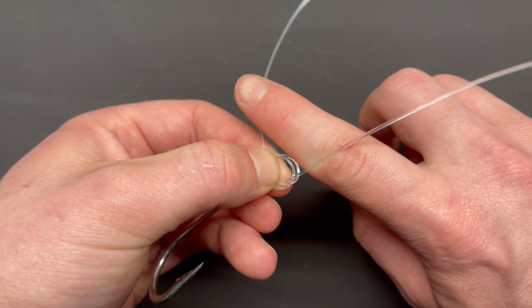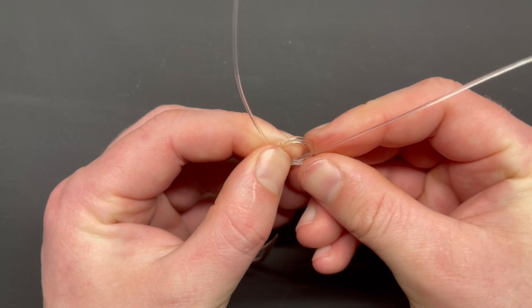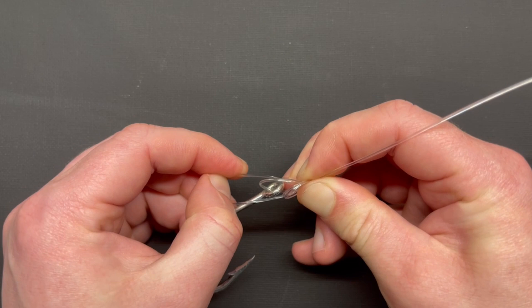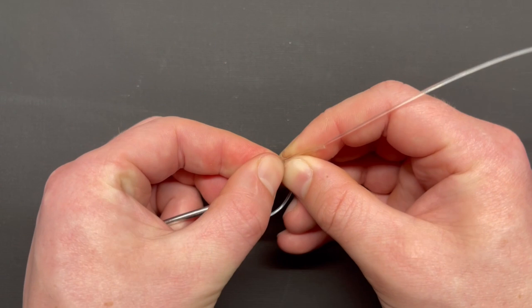Now what you want to do, holding those in place, take your tag end, you can let go of your knot if you need to, and run your tag end through all three of those. Pull the slack out, all your three loops are there, and then you can slowly cinch it down.